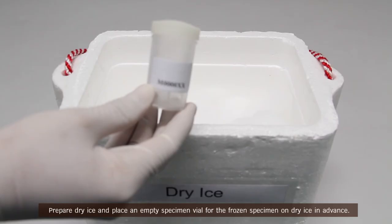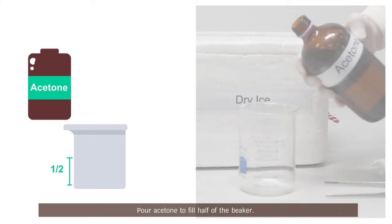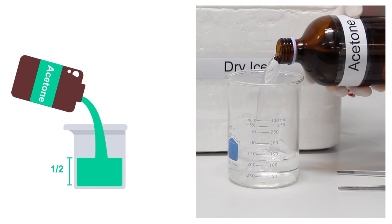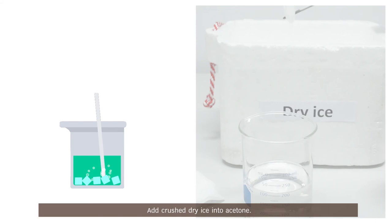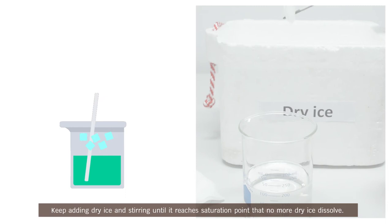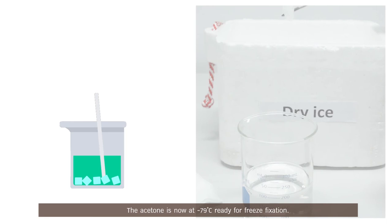Prepare dry ice and place an empty specimen vial for the frozen specimen on dry ice in advance. Pour acetone to fill half of the beaker. Add crushed dry ice into acetone. Keep adding dry ice and stirring until it reaches saturation point that no more dry ice dissolves. The acetone is now at minus 79 degrees Celsius, ready for freeze fixation.